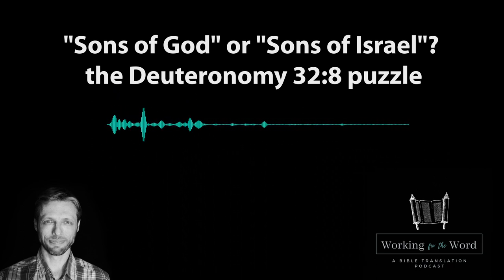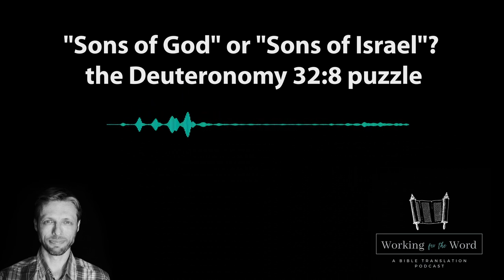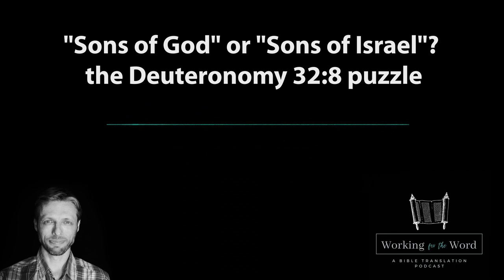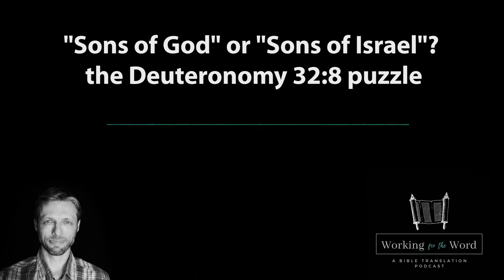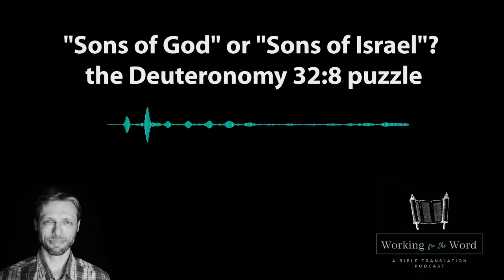Before we get into Deuteronomy 32, we need to talk about the different kinds of Hebrew that we find in the Hebrew Bible. Unfortunately, we don't have a uniform Hebrew throughout the whole text, because the Hebrew Bible was written over a span of many more centuries than the New Testament was. With the New Testament, the Greek is much more uniform — we're not talking about a thousand-year jump between one book and the next in the sort of language that's used, but the Hebrew Bible has that going on.